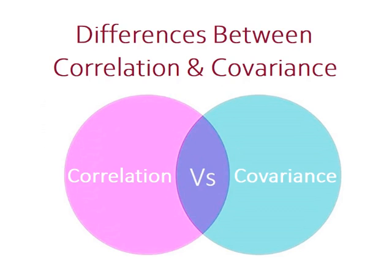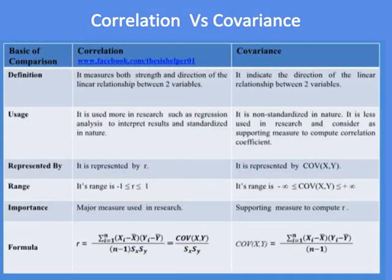Differences between correlation and covariance. Correlation is defined as a measure of both the strength and direction of the linear relationship between two variables, while covariance indicates only the direction of the linear relationship between two variables.